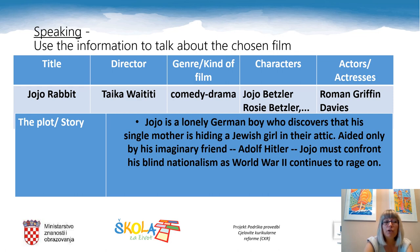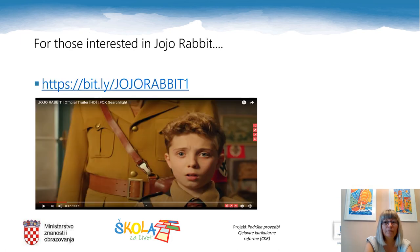Let's see. Jojo Rabbit is a comedy drama directed by Taika Waititi. Jojo Betzler, the main character, portrayed by Roman Griffin Davis, is a lonely German boy who discovers that his single mother, Rosie Betzler, acted by Scarlett Johansson, is hiding a Jewish girl in their attic. Aided only by his imaginary friend Adolf Hitler, Jojo must confront his blind nationalism as World War II continues to rage on. I hope you have the picture. Now, when you know the plot, if you got interested in the movie, copy the link bit.ly/jojorabbit1 in your browser and watch the trailer.